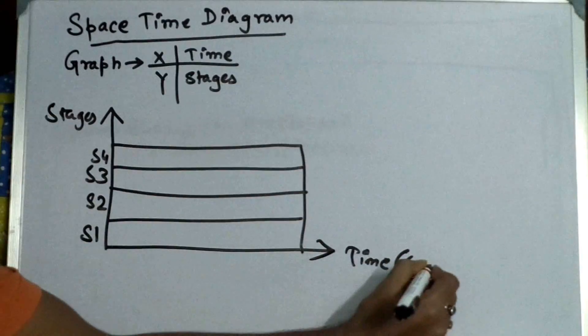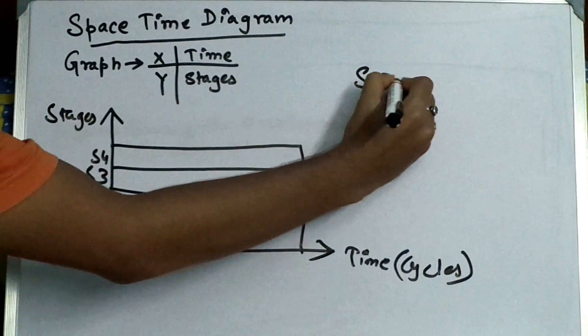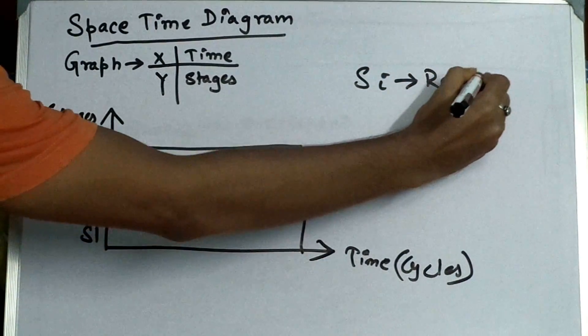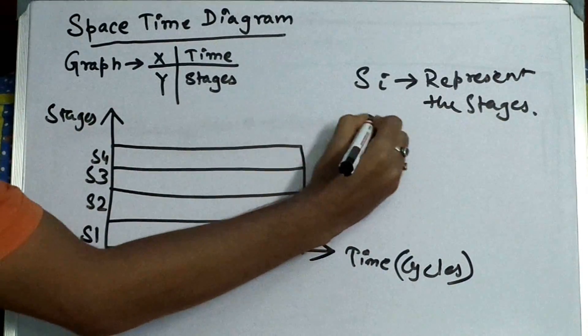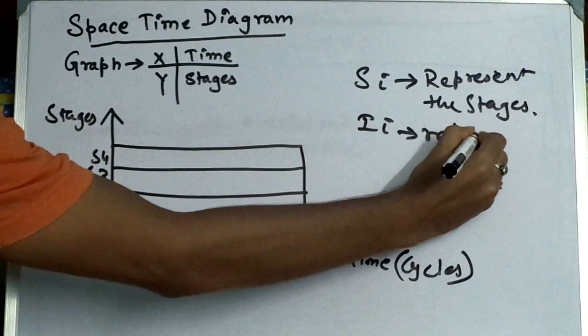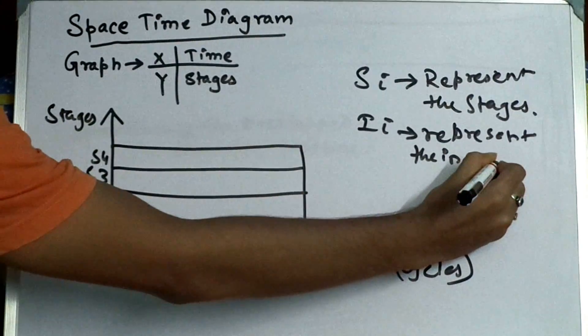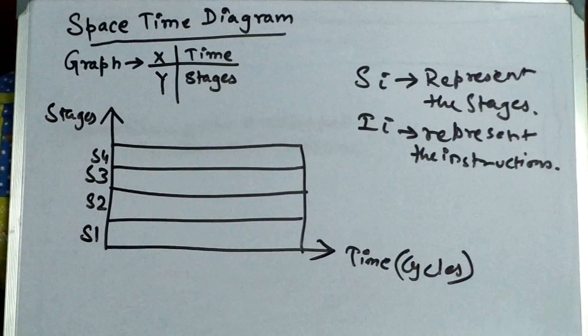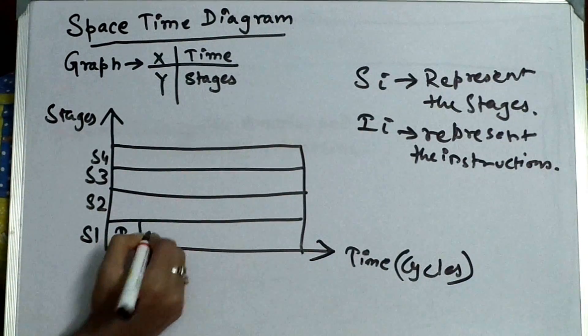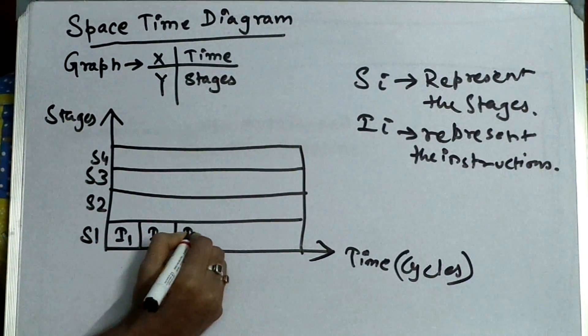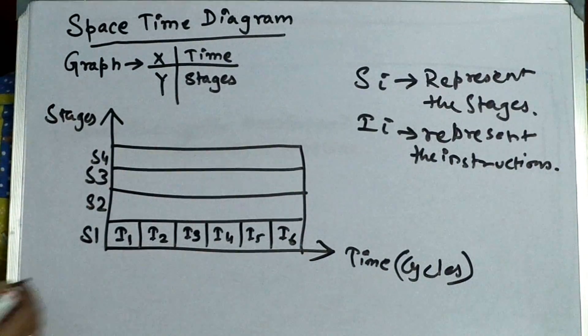Y represents the stages and I represents the instructions. So let me, S1 having six stages, say I1, I2, I3, I4, I5, and I6 like this.